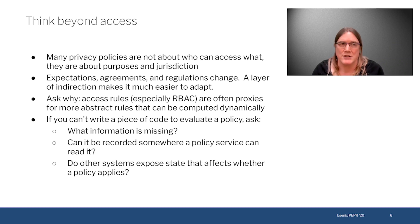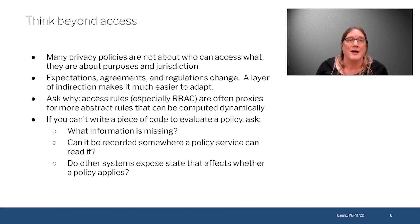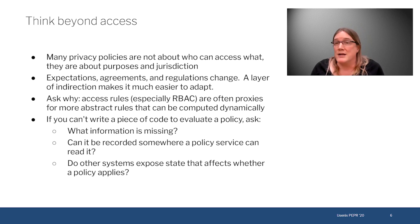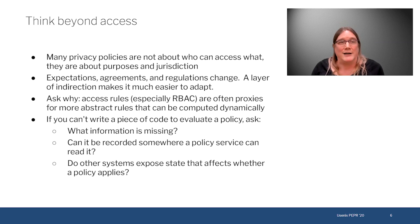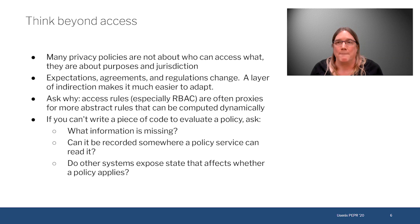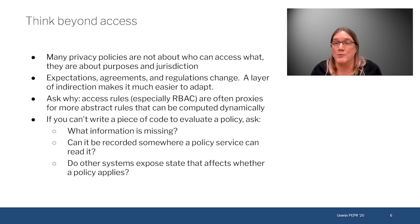Many privacy and security policies are not just about who can access what, or what group somebody needs to be in, or what ACLs are in place — they're about purposes and jurisdiction. There's a reason behind most of these rules, even if they ended up encoded in traditional ACL or clearance-and-authorization frameworks. If you dig down to the why, you can express them in more concise form by evaluating these kinds of attributes more directly. Expectations, agreements, and regulations change — a layer of indirection, where you're calling a policy server that looks up the current policy and evaluates it, makes it much easier to adapt and add or remove constraints as laws, regulations, or user expectations change.